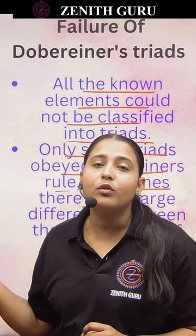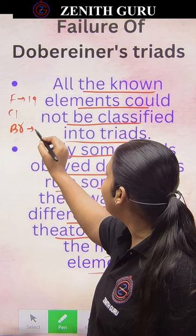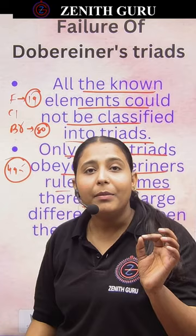For example, fluorine, chlorine, and bromine — all these are halogens. Fluorine's atomic mass is 19, and bromine's atomic mass is 80. When we sum both and divide, we get 49.5. But the atomic mass of chlorine is 35.5. So there is a limitation in Döbereiner's Triads.